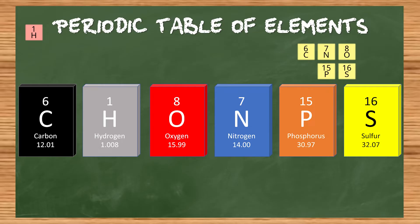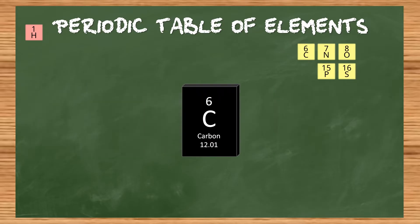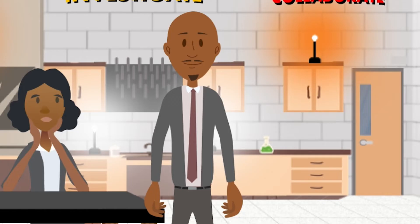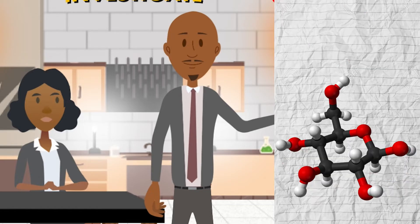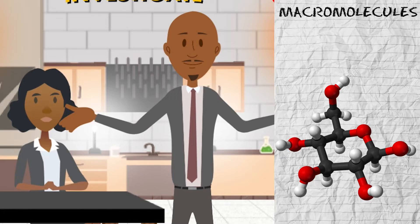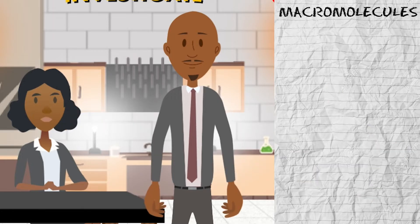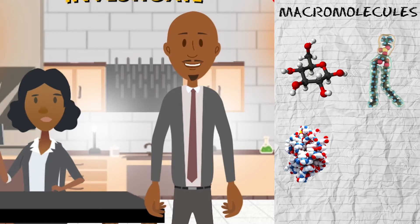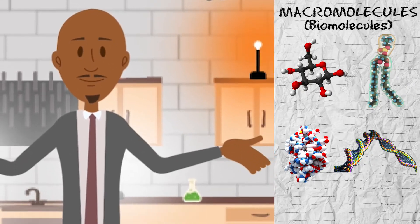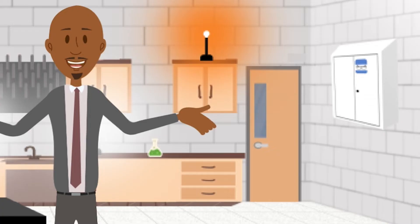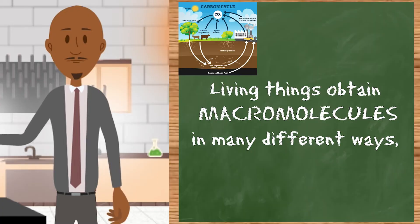Most living things contain a lot of carbon, but we rarely get these elements in their purest form — we get them as molecules like water and carbon dioxide. But even those small molecules are produced from larger molecules called macromolecules. There are four macromolecules: carbohydrates, lipids, proteins, and nucleic acids — sometimes called biomolecules. You also probably learned that we obtain and reuse these elements through the different biogeochemical cycles.